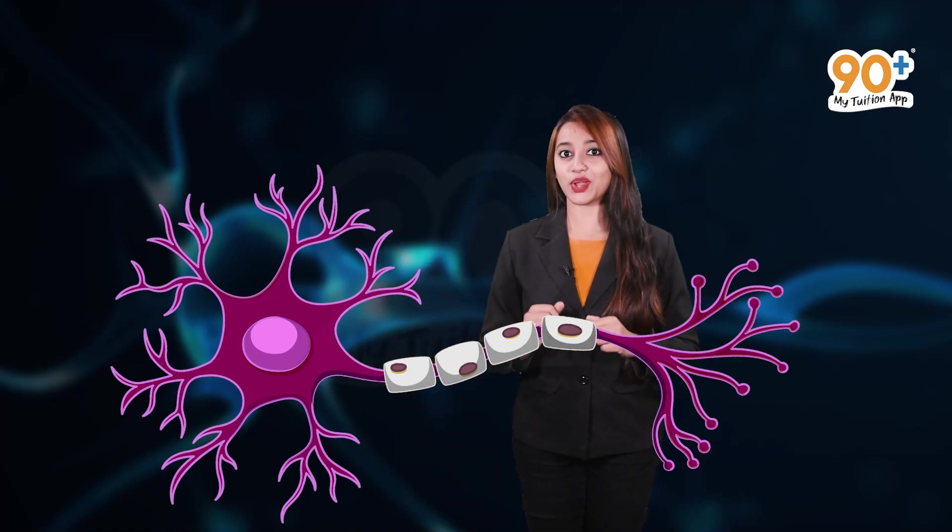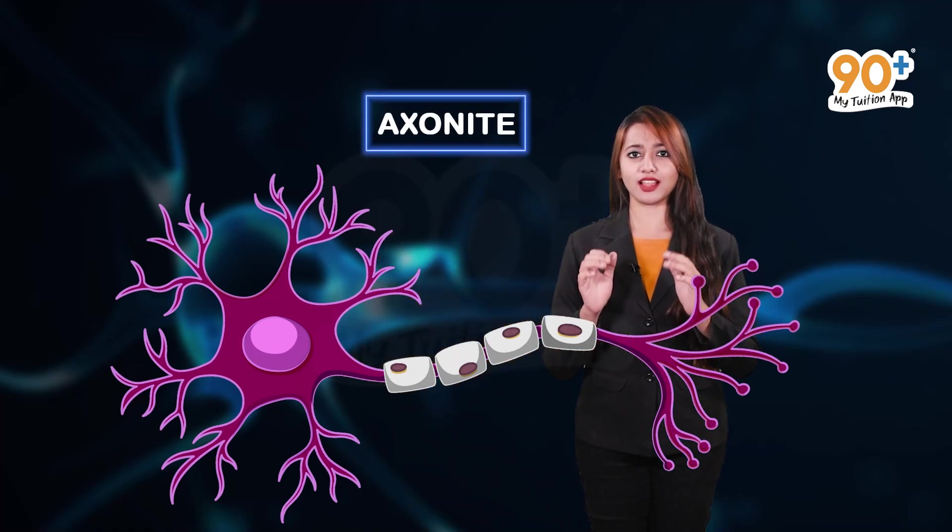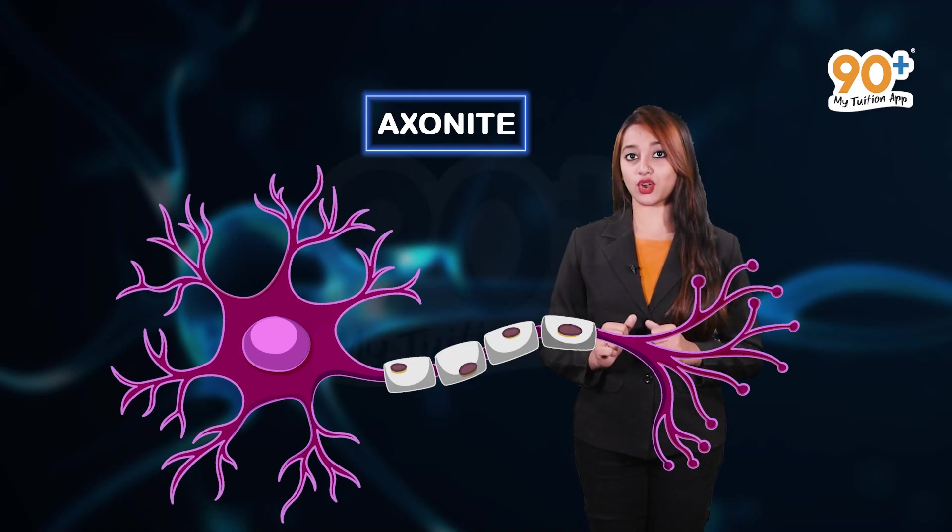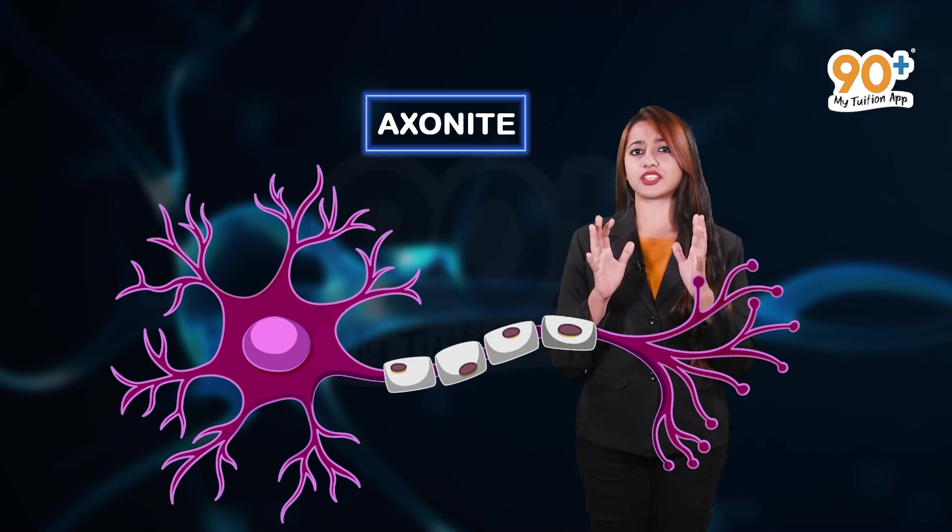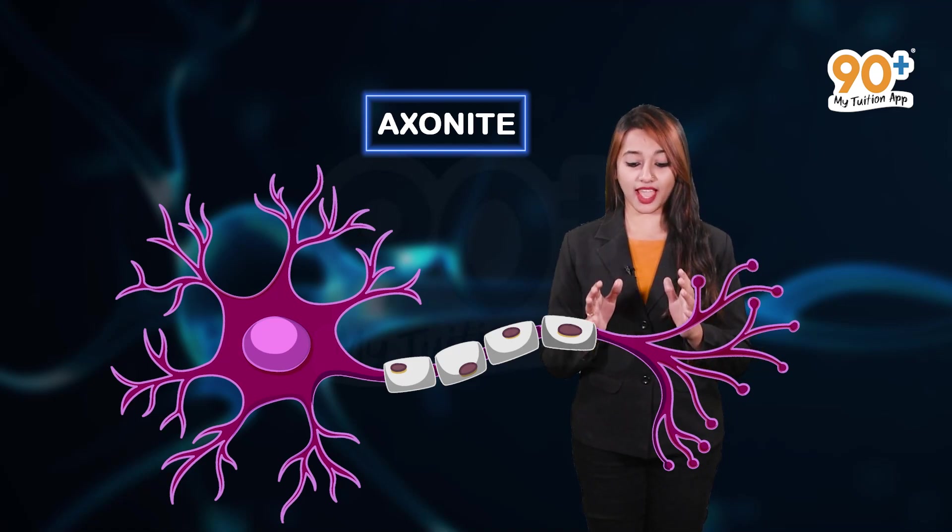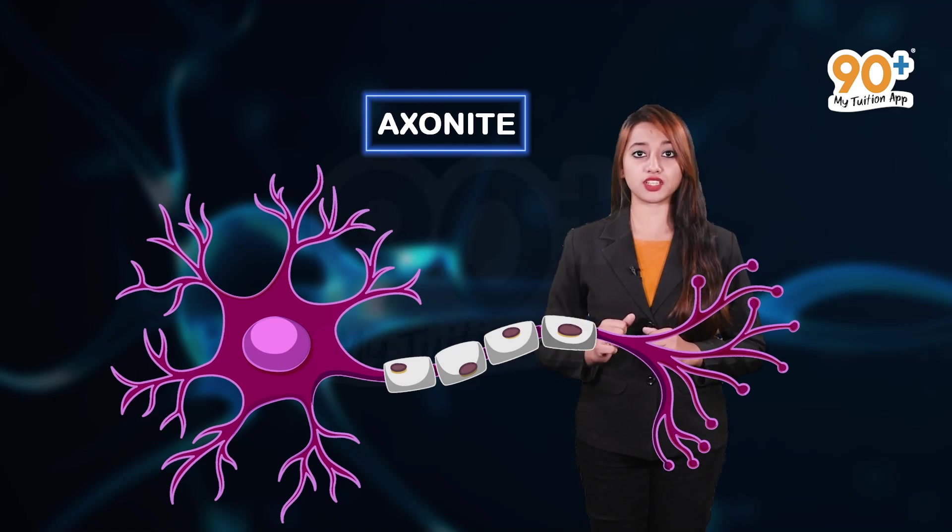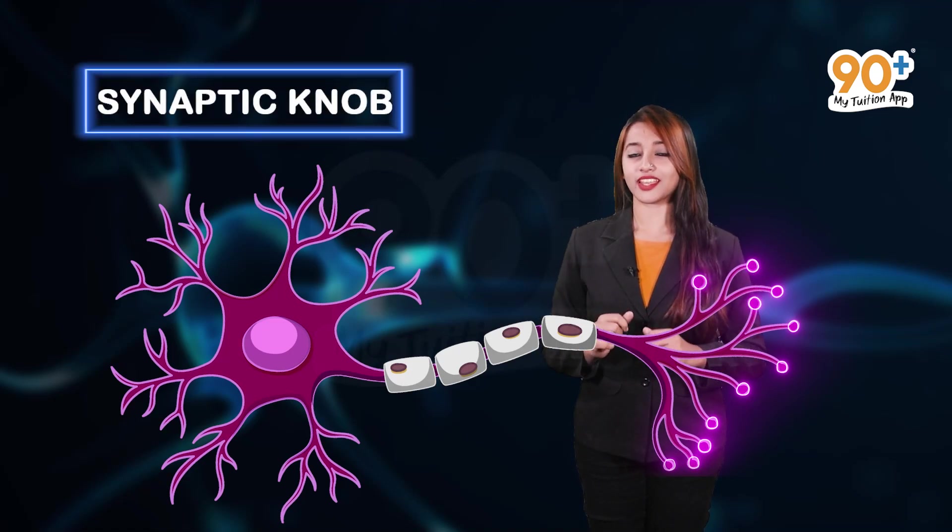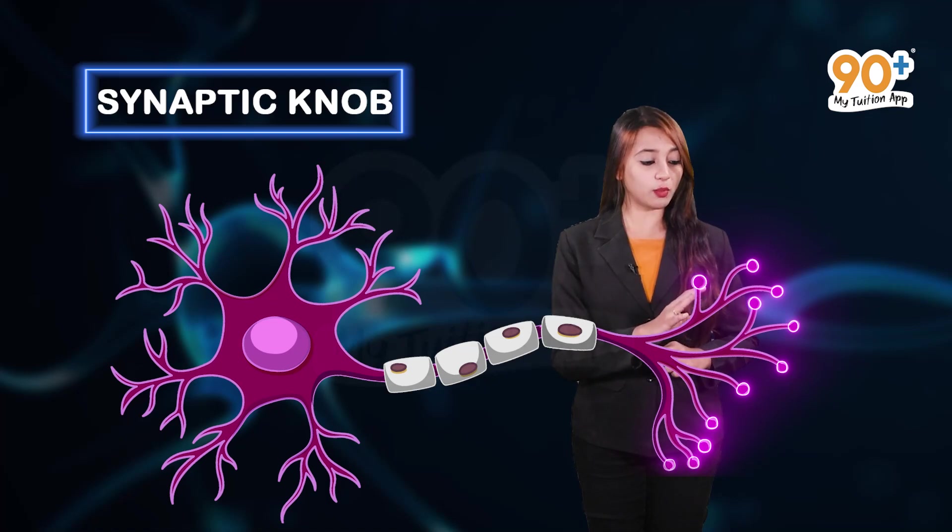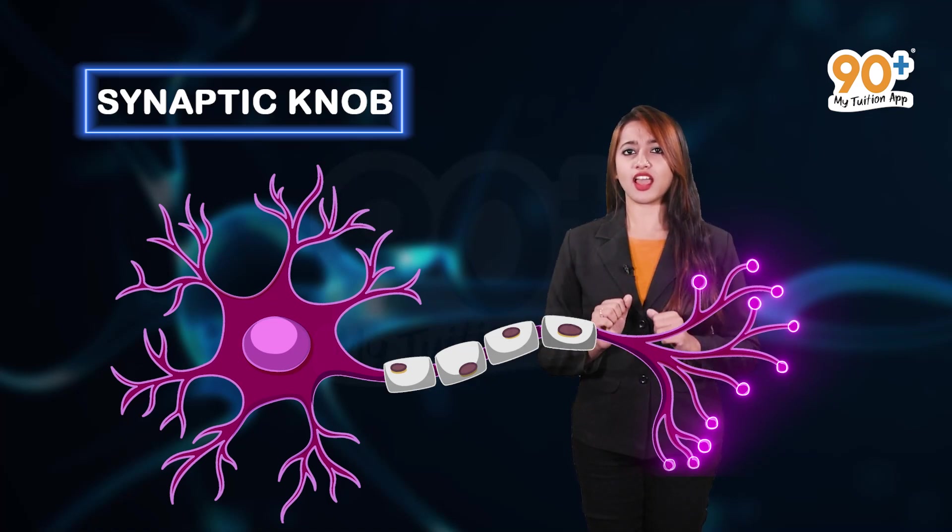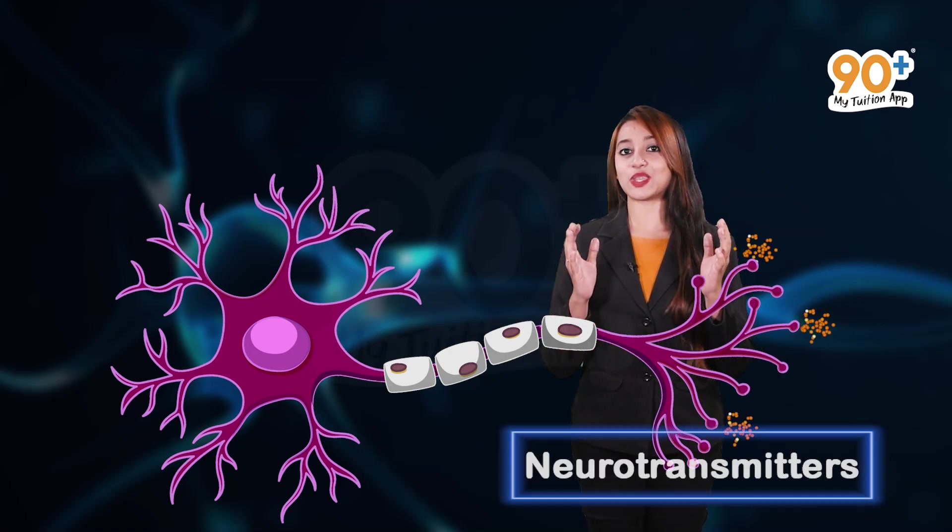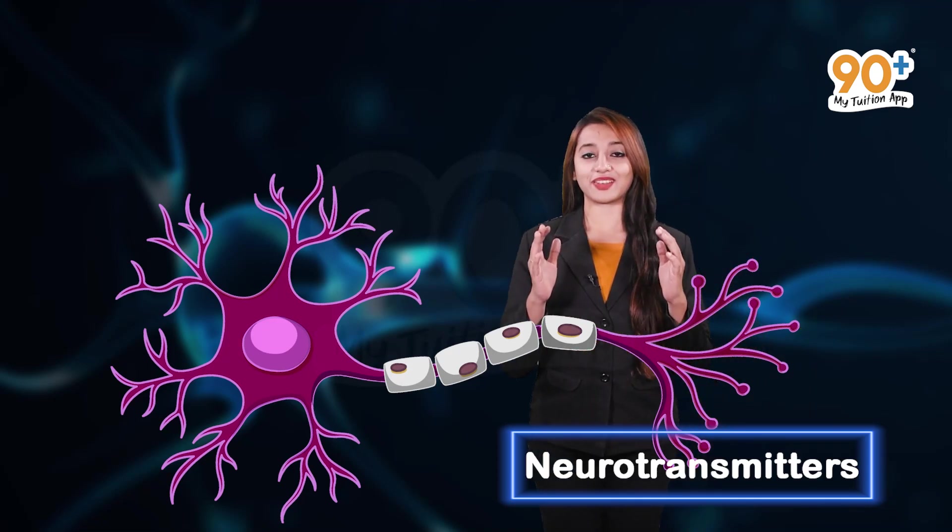And what do you know about the axonites? These are the branch-like structures that are arising out of the axon. They receive electric impulses from the axon and then transfer it to the synaptic knob. Do you know what is synaptic knob? Yes, these are the knob-like structures which are seen at the tips of the axonites and these knobs release certain chemicals and that is called the neurotransmitters.